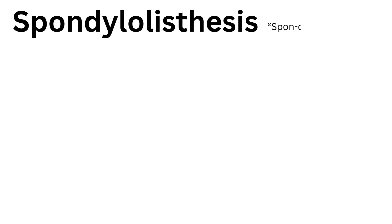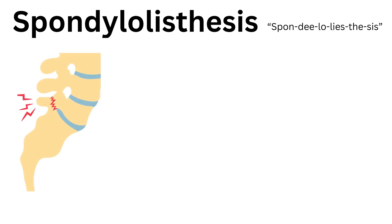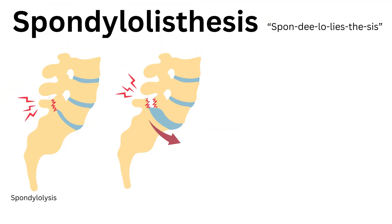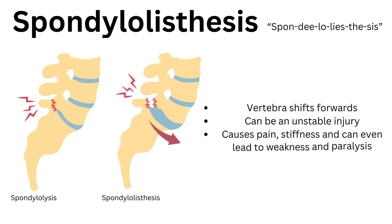When looking at spondylolisthesis, it is important to note that this can be caused as a result of spondylolysis. Simply put, spondylolisthesis is when the affected vertebra shifts forward out of place and out of alignment. This can be congenital, or it could be due to a lack of stability at the joint caused by spondylolysis. It may also be caused by a traumatic process or injury. This pathology may cause pain, stiffness, and in the most severe cases it could even lead to weakness or paralysis.